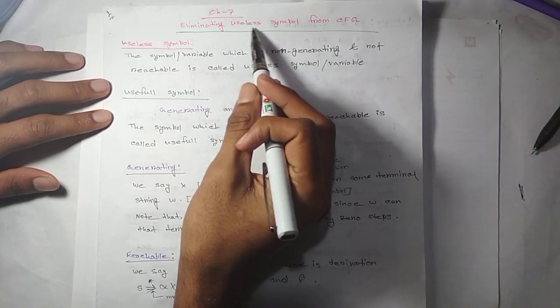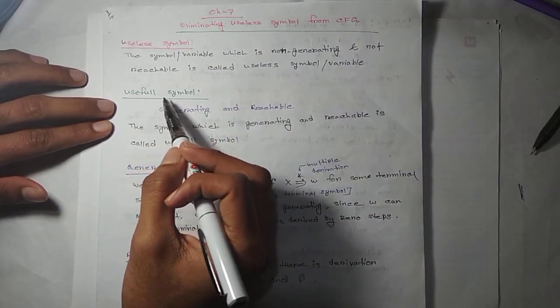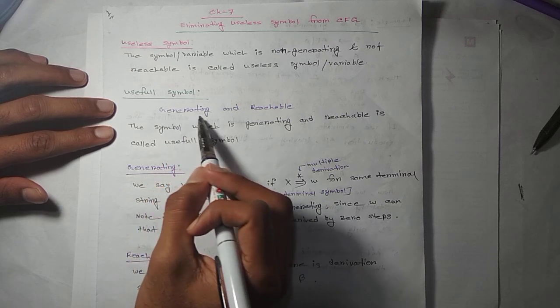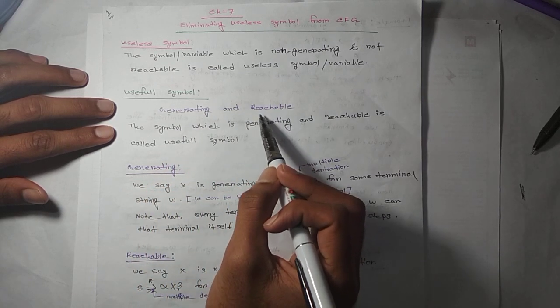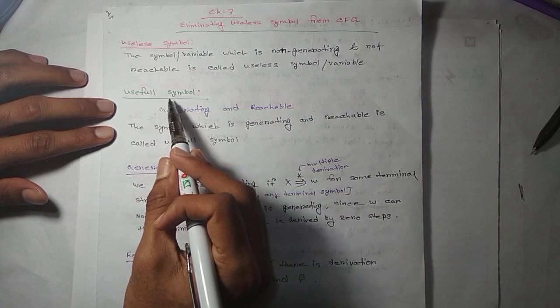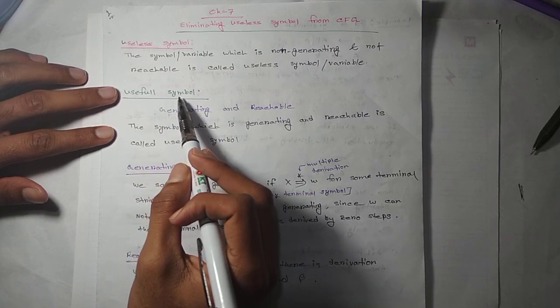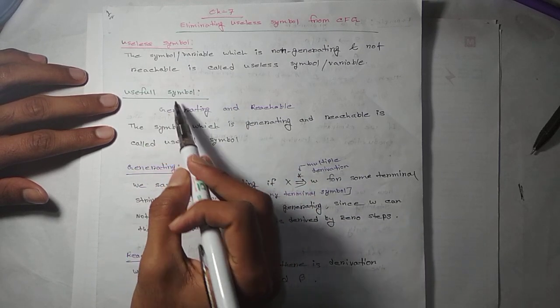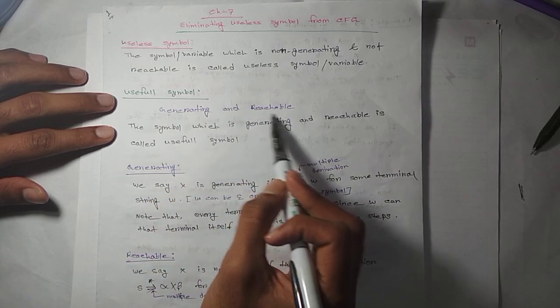So, what is a useful symbol? The symbol which is both generating and reachable. These symbols are called useful symbols. If a symbol is useful, both generating and reachable.